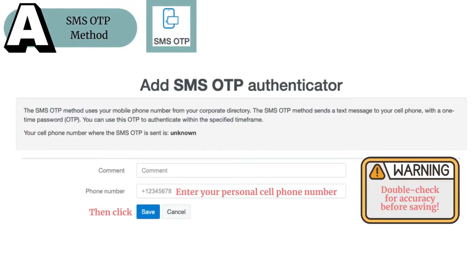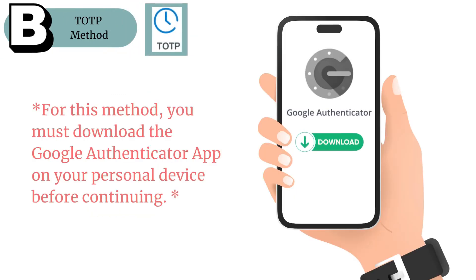If you selected Option A, the SMS one-time passcode method, this will send a text message to your personal device. On the following screen, you will enter your phone number — make sure it's your personal cell phone number — and double-check for accuracy before saving. As soon as you click Save, this option will be enabled.